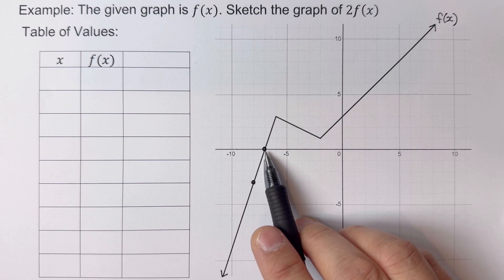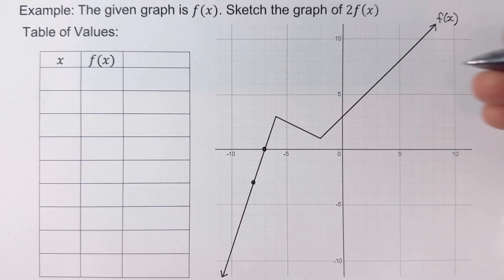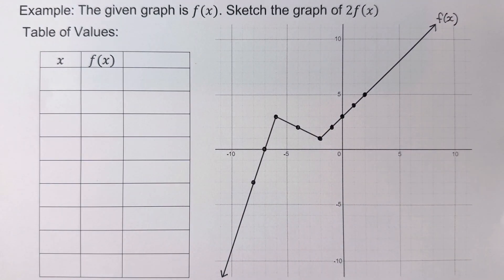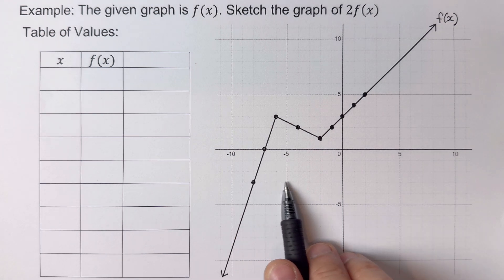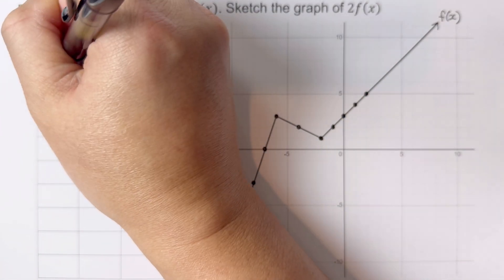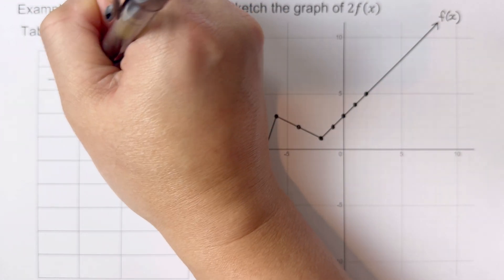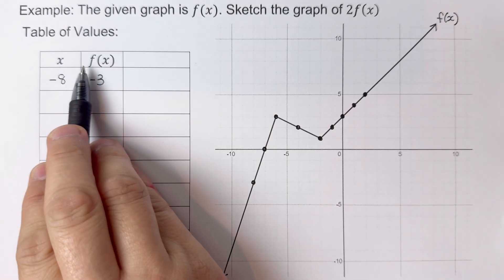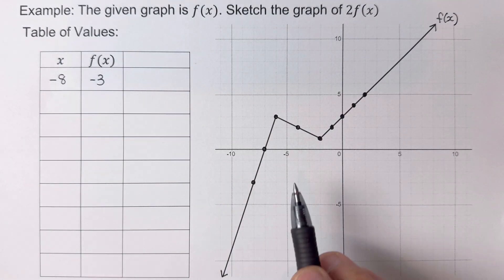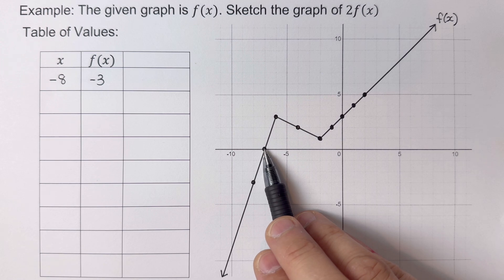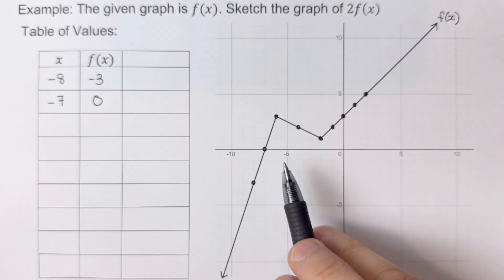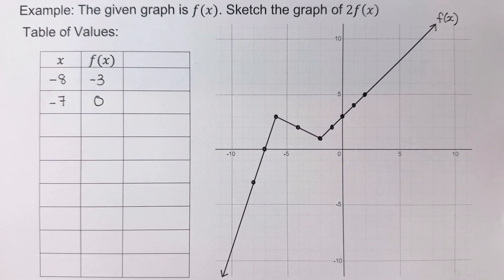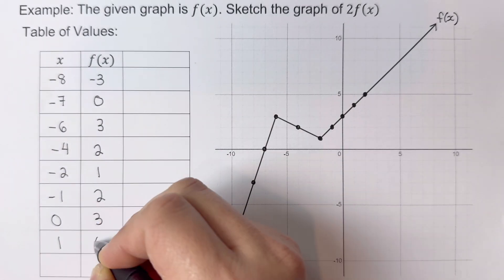I'm going to determine the coordinates for each of these points. So this is negative 8, negative 3, where this is our x and this is our y value, f(x). The next dot is negative 7, 0. Now I'm going to determine the coordinates for the rest of these dots.